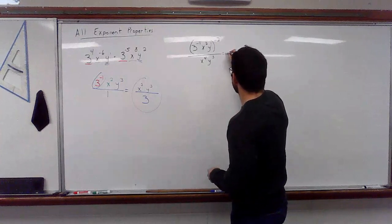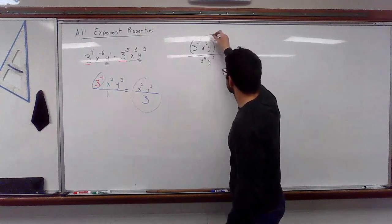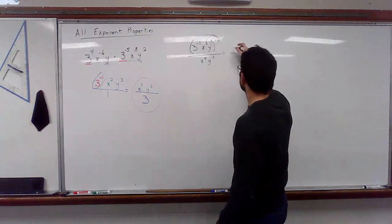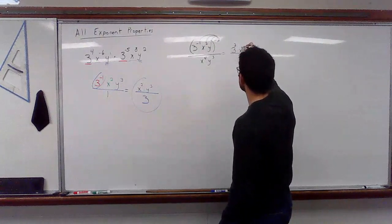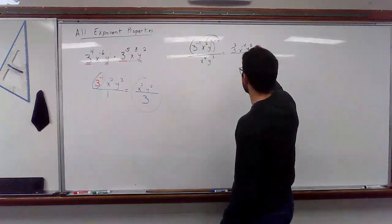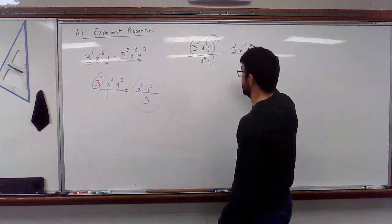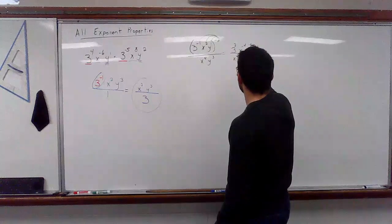So, it stays as a fraction. We're only distributing to the parentheses, just like we would normally. So, now I have 3 to the positive two, x to the negative four, y to the positive two, negative two, x to the fourth, y to the third.